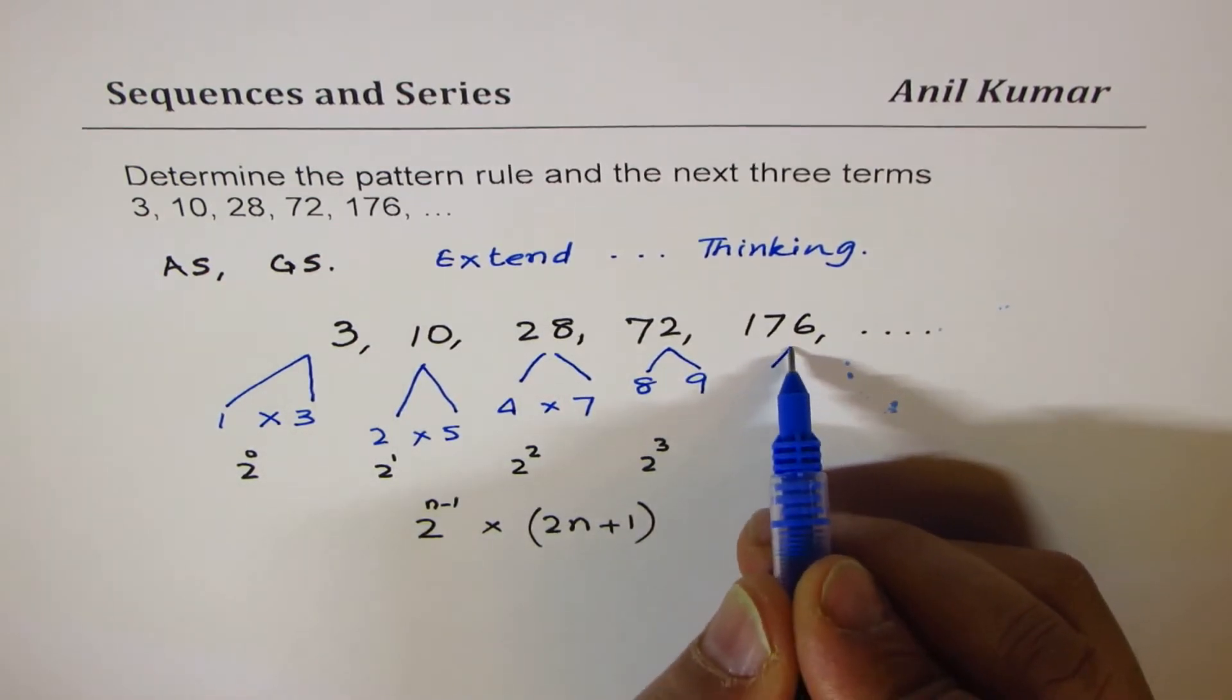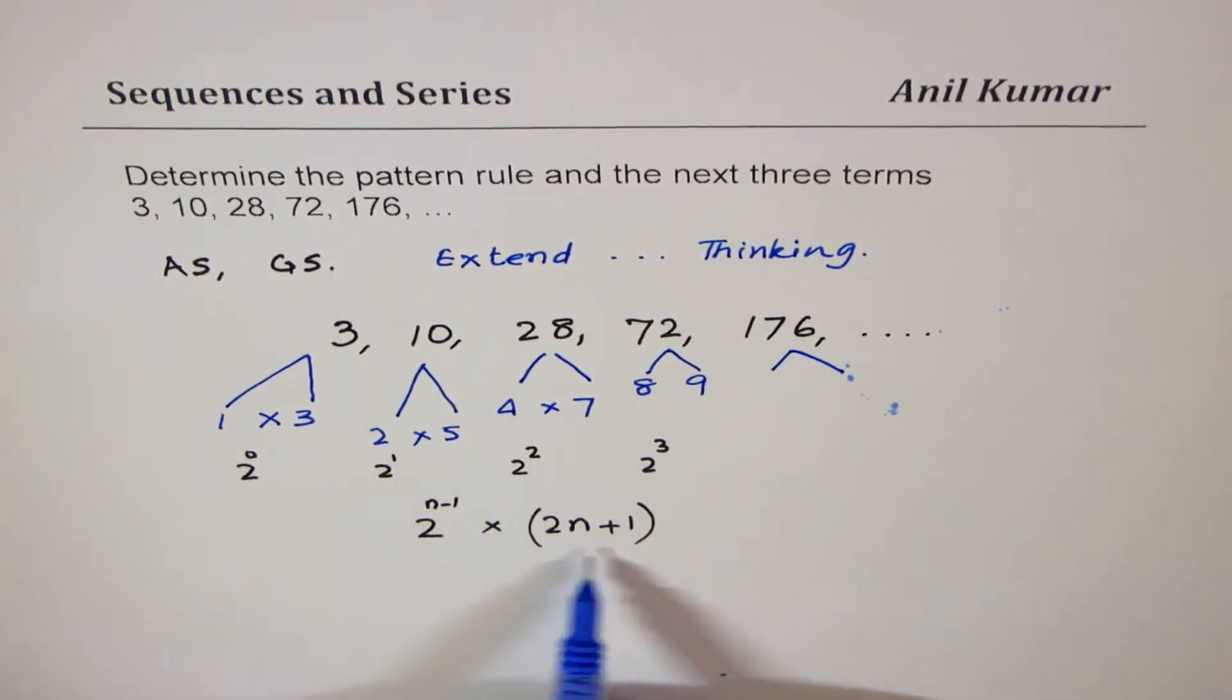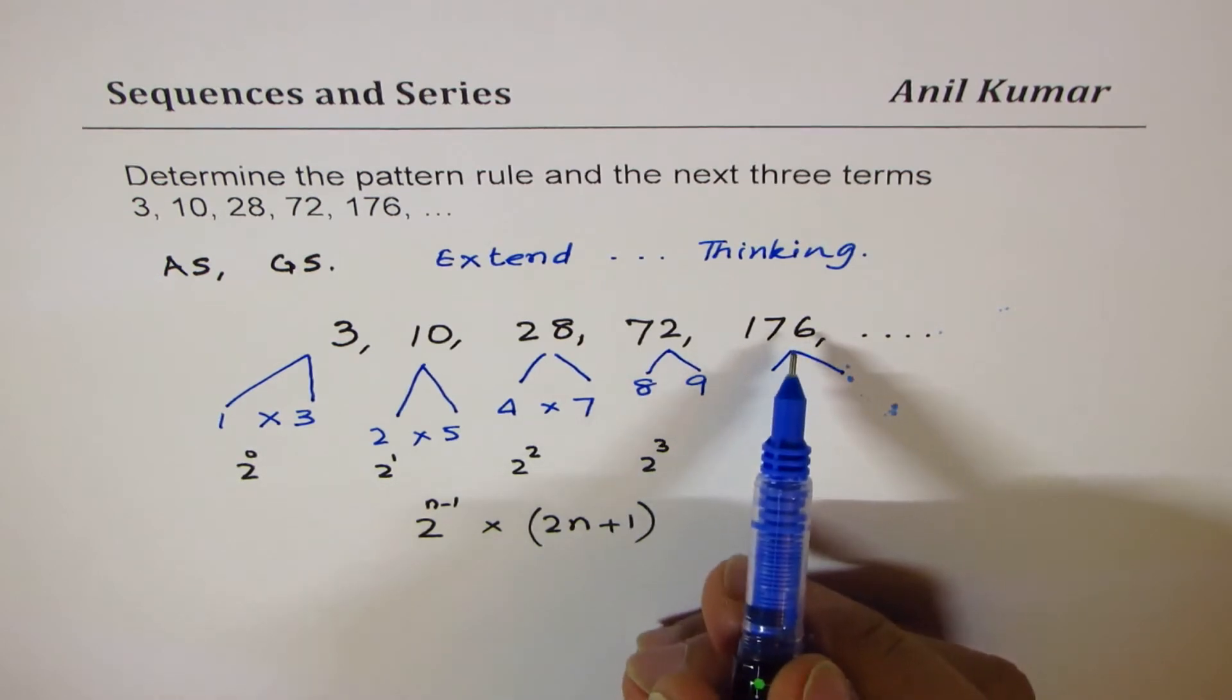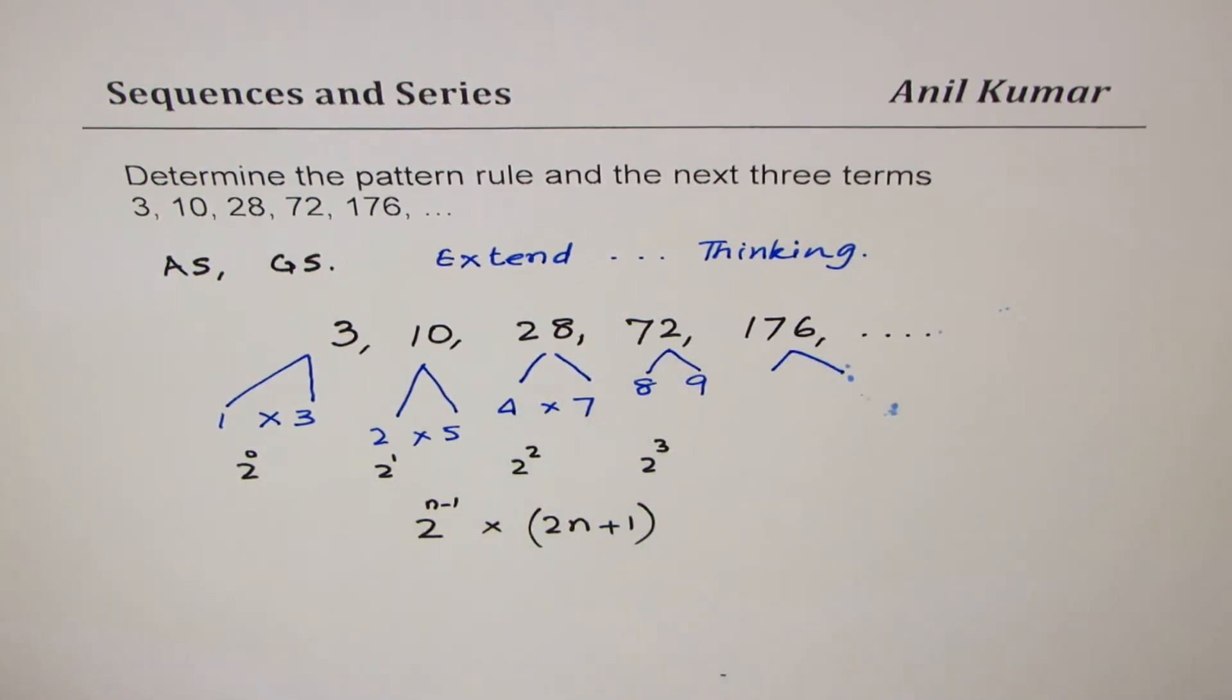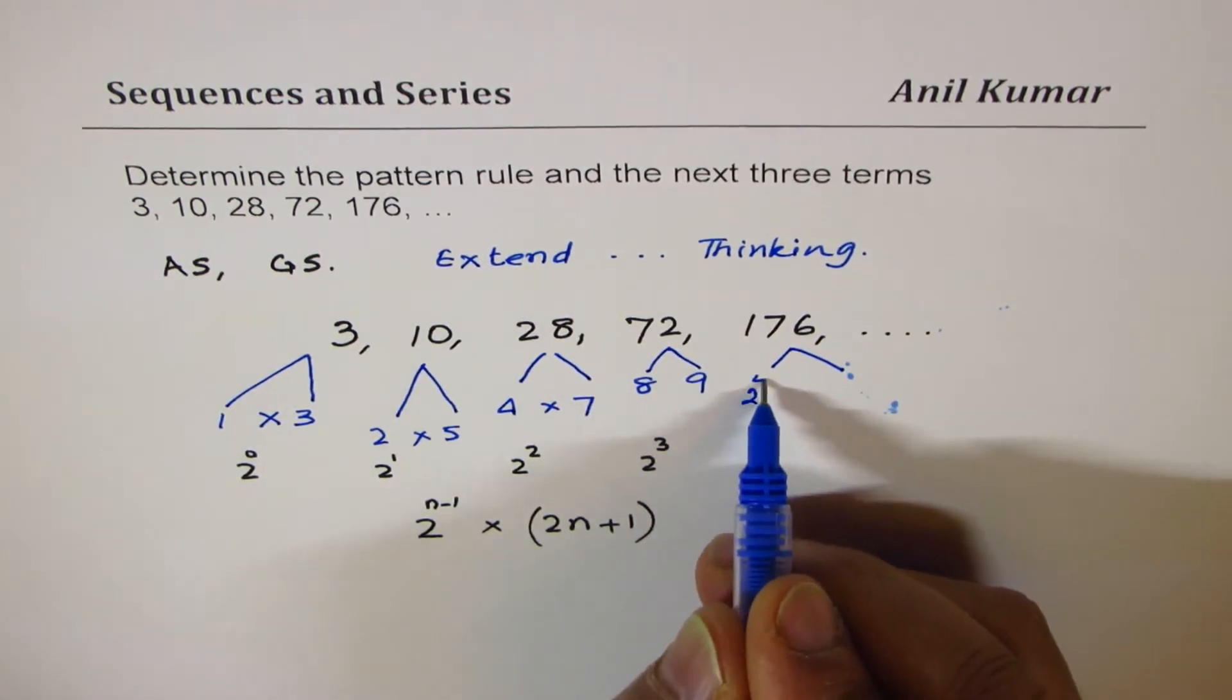Now, 176, let's check this out. Can we apply this rule to get 176? That is to say, if I use the number 2 to the power of 4. That is what we expect, 2 to the power of 4.